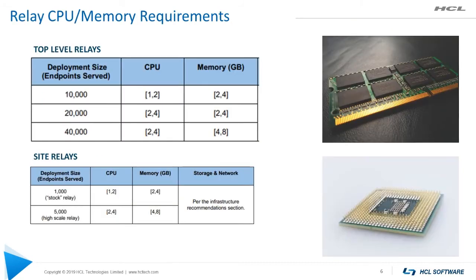Let's talk about relay CPU and memory requirements. There are two charts: one for top-end relays and one for site relays. For top-end relays, count up all the clients managed by all the site relays to get your client count. If you're at the lower end of the range, use the lower CPU number; at the higher end, use the higher number. The same goes for memory, and site relays follow the same pattern.